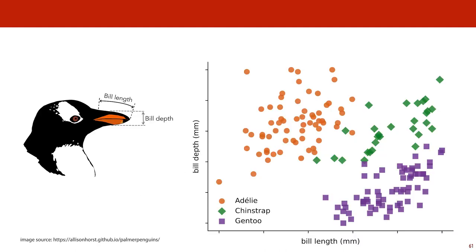Here's an example from the penguin dataset. If we plot the bill length and bill depth, we see that the three species separate pretty clearly in this feature space. If we remove the information that there are separate clusters, can we recover it purely from these two features alone? Note that this is not classification, because we are not giving our learner labels. We're not telling it the species of any instance — it has to figure out a clustering purely from the natural separation of the data. The only hint we'll give it is the number of clusters we expect to find: three in this case.